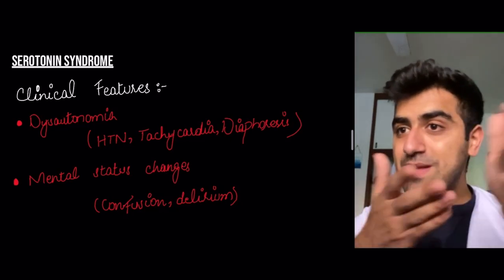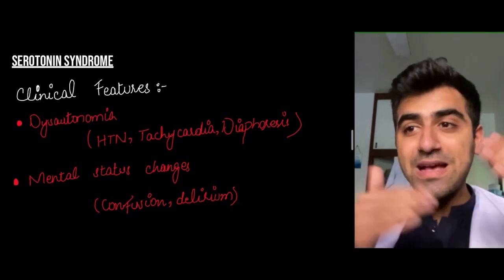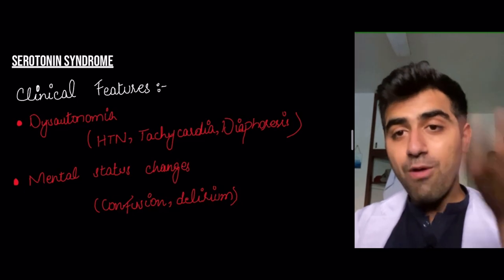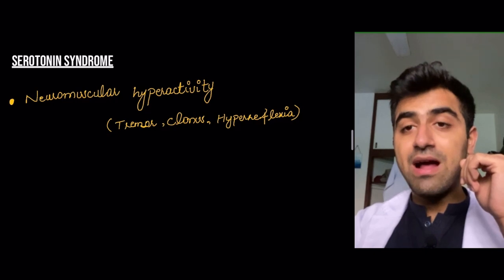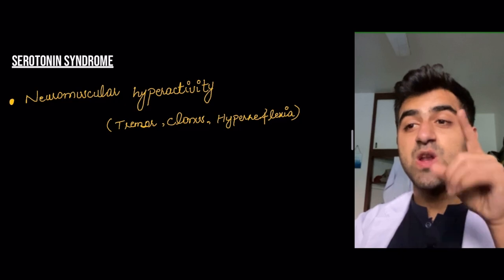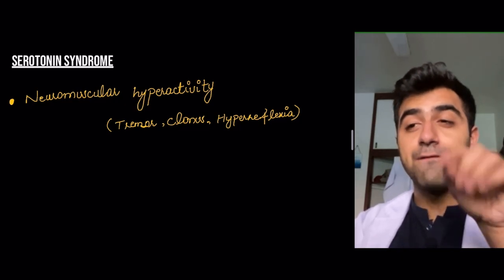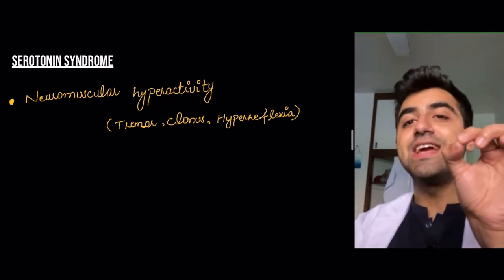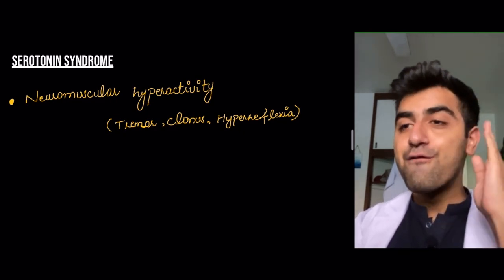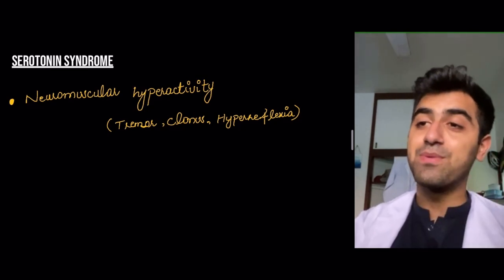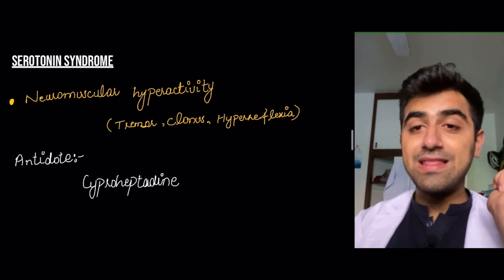Additional features include mental status changes such as confusion and delirium, because these medications disrupt neurotransmitter levels in the brain. There is also neuromuscular hyperactivity: tremors, clonus, and hyperreflexia. This neuromuscular component is key to differentiating serotonin syndrome from other syndromes such as neuroleptic malignant syndrome or malignant hyperthermia.